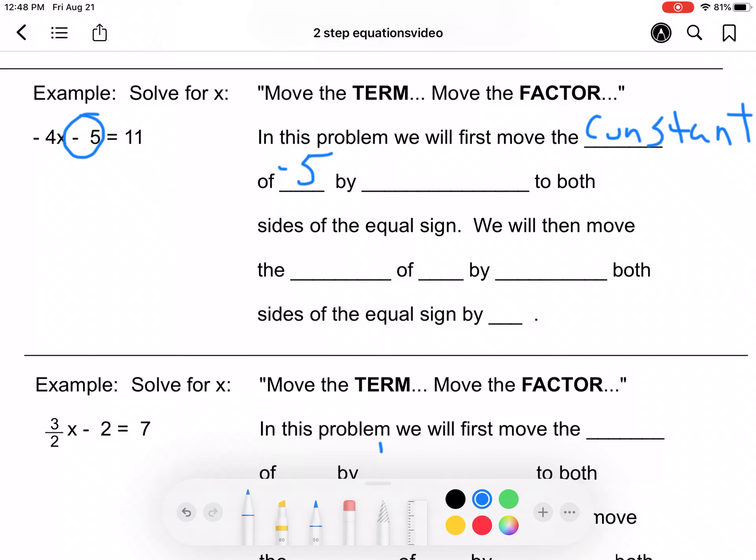The constant this time is not 5. It's negative 5 because there's a subtraction sign there. Well, again, we're subtracting it. So what's the inverse of subtraction? Adding it to both sides.